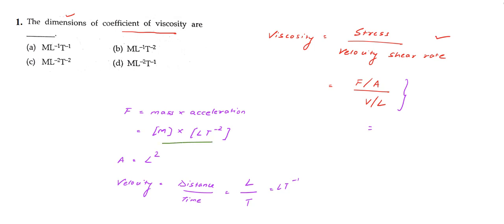The dimension of force F is M·L·t⁻², divided by area L², all divided by velocity L·t⁻¹ over L. Solving and simplifying this, we get M·L⁻¹·t⁻¹. Checking our options, option A gives M·L⁻¹·t⁻¹, so option A is our correct answer. Now let us move on to question 2.